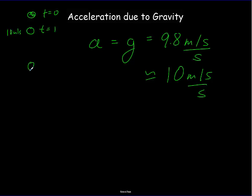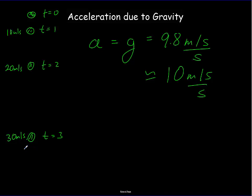The object gets going faster, so it drops a greater distance each second. After 2 seconds it's going 20 m/s, after 3 seconds it's going 30 m/s — gaining about 10 m/s every second. This applies to any dropped object, regardless of mass, but only in the absence of air resistance.